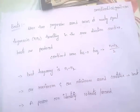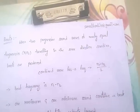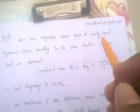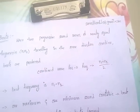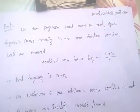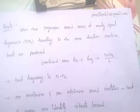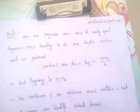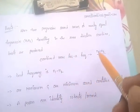The next topic is beats. When two progressive sound waves of nearly equal frequencies n1 and n2 travel in the same direction, they combine and beats are produced. The combined wave frequency is the average (n1 + n2)/2.